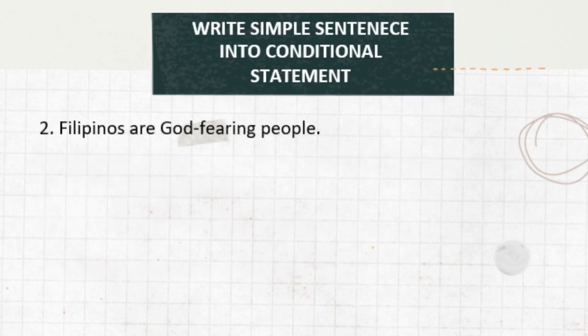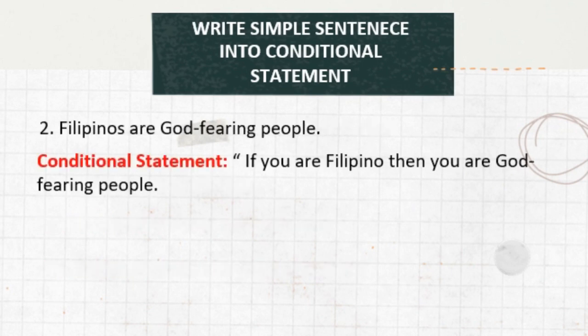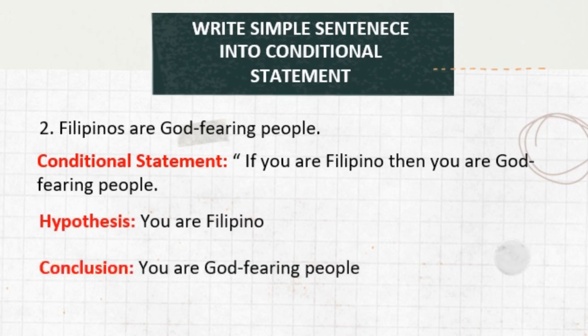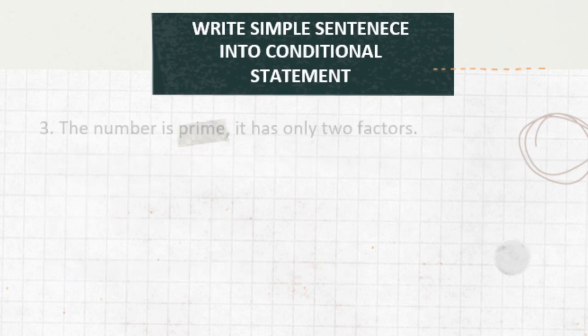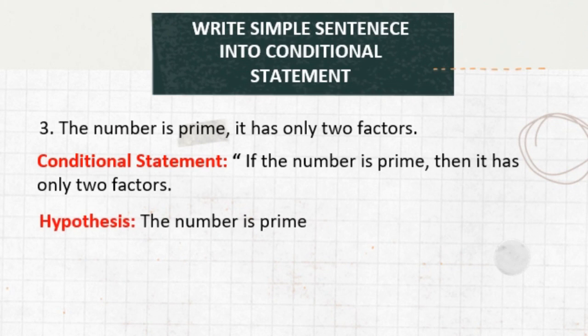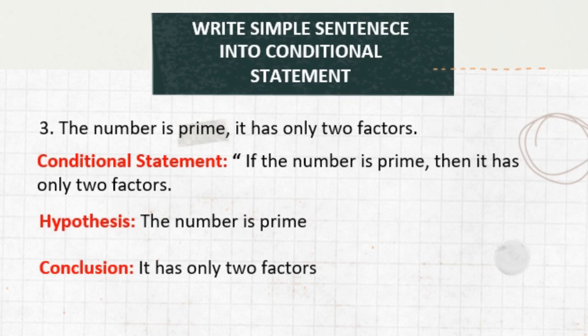Second example: Filipinos are God-fearing people. The conditional statement: if you are Filipino, then you are God-fearing people. The hypothesis: you are Filipino. The conclusion: you are God-fearing people. Third example: the number is prime, it has only two factors. The conditional statement: if the number is prime, then it has only two factors. The hypothesis: the number is prime. The conclusion: it has only two factors.